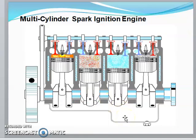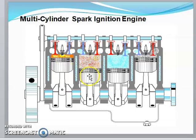Next, let's see the simple function of a multi-cylinder spark ignition engine, which was already discussed in earlier slides. There are four strokes: the suction stroke, compression stroke, expansion or power stroke, and exhaust stroke. There is an inlet valve and an exhaust valve. A spark plug is used for igniting the air-fuel mixture. This is the simple working function of a multi-cylinder spark ignition engine, and here is the engine manifold.